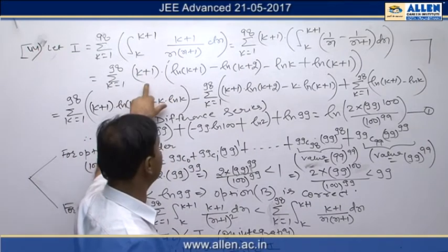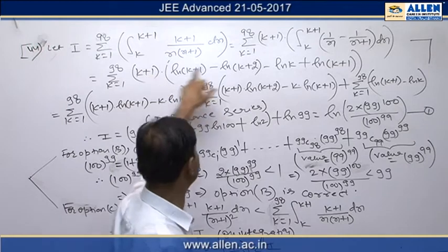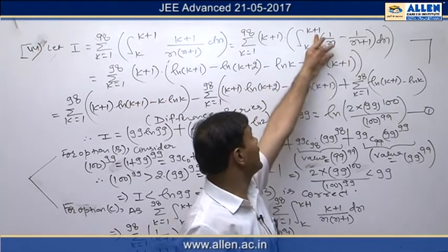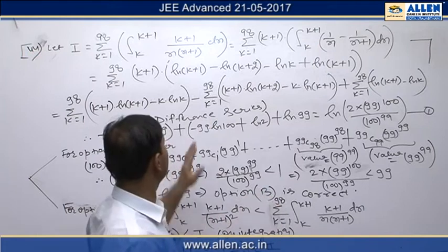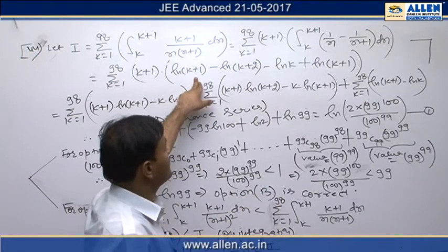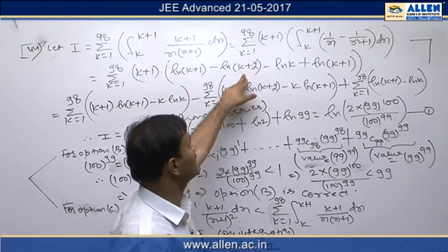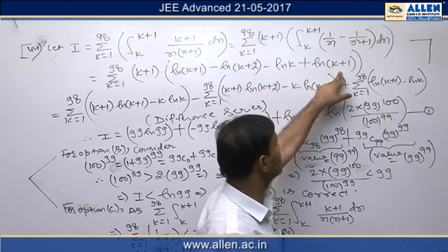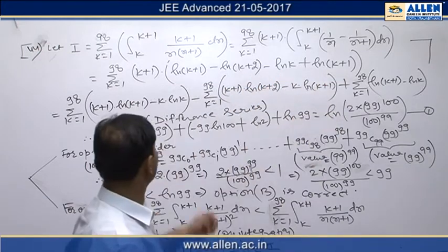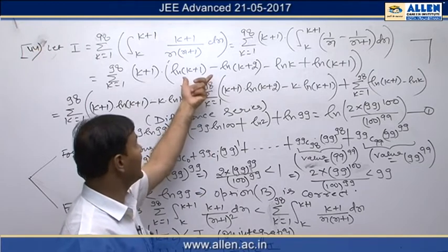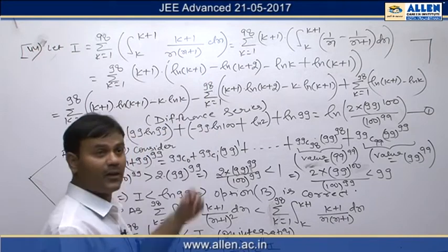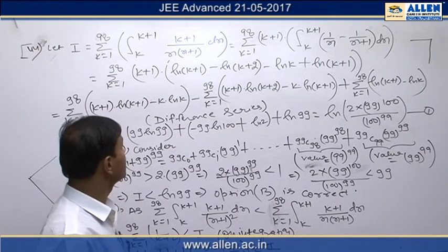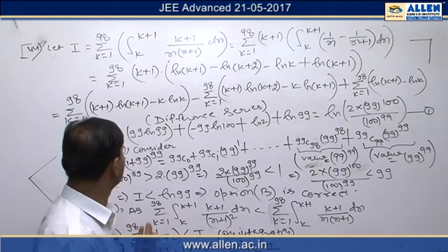We again have summation k from 1 to 98 multiplied by that factor. On integrating and substituting upper minus lower limits, we get ln(k+1) minus ln(k+2) minus ln(k) plus ln(k+1). We then rearrange this entire result as a difference of two terms so that we can find the sum of the given series.